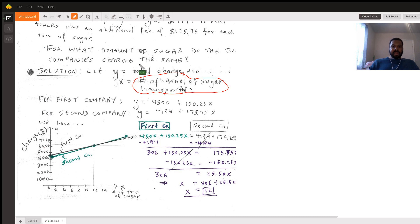Now what we're trying to do is make sense of this problem before we start solving it. If you gather your information, the first company charges an initial fee of $4,500 for the truck and then $150.25 per ton of sugar.